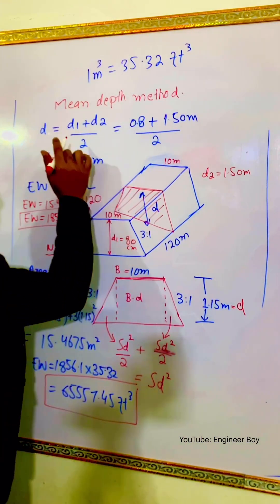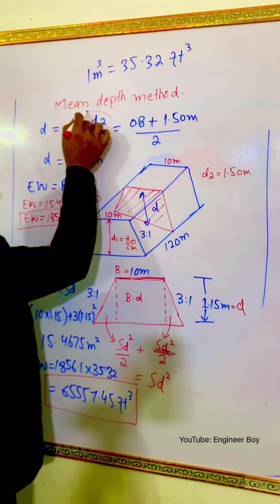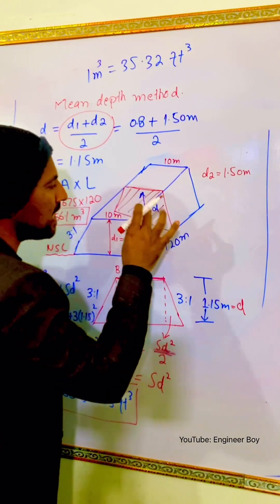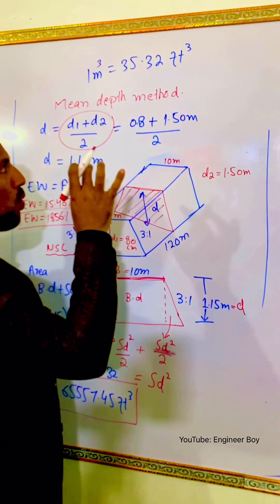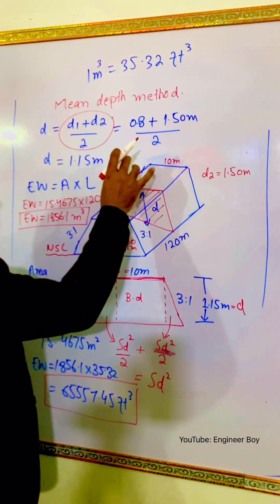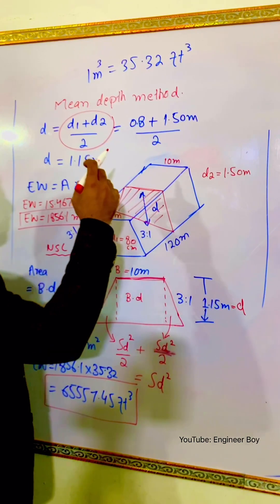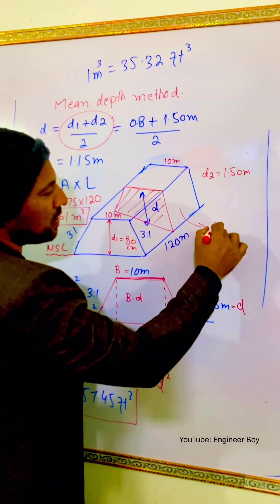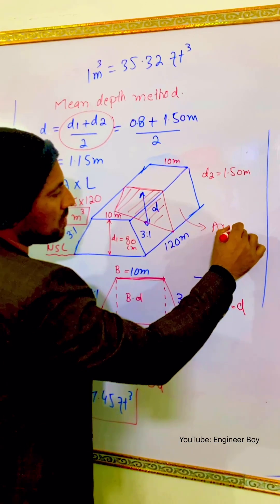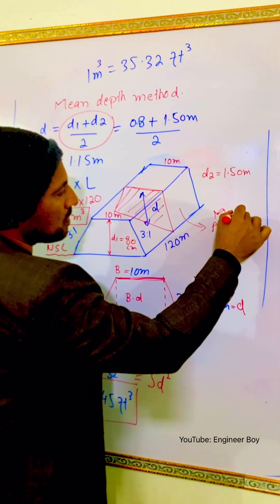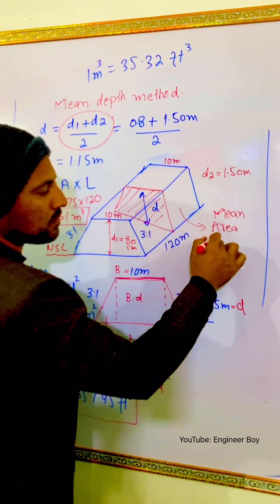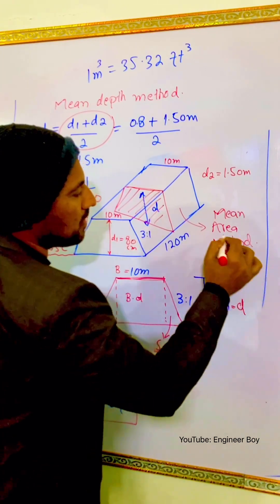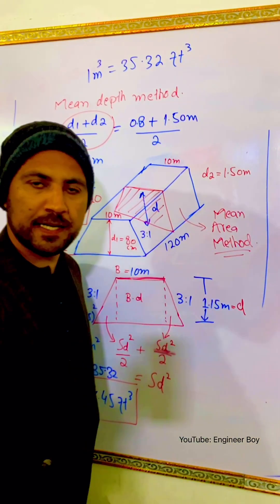This is how we determine the quantity of an embankment using the mean depth method. In the next video, we are going to solve the same problem using the mean area method.